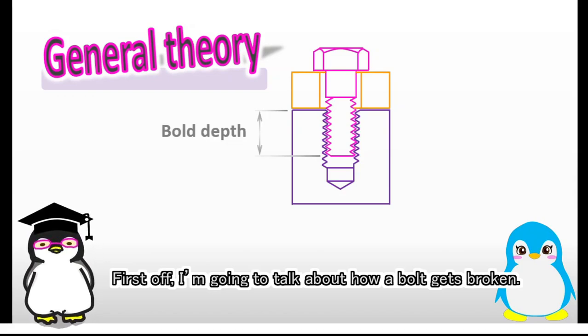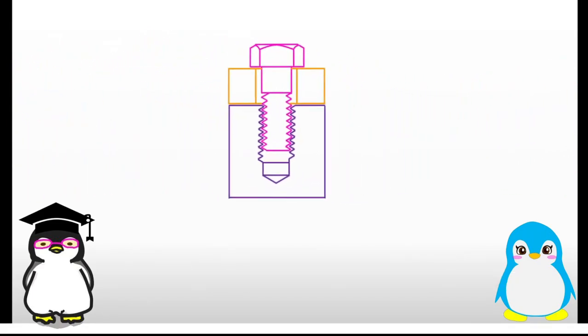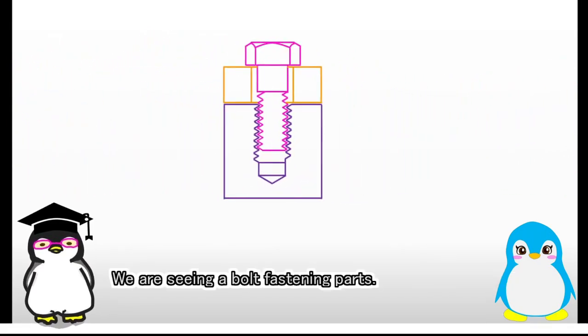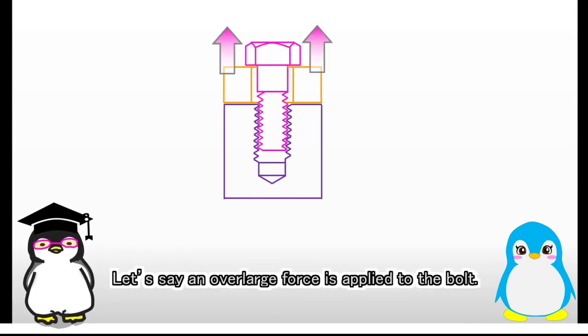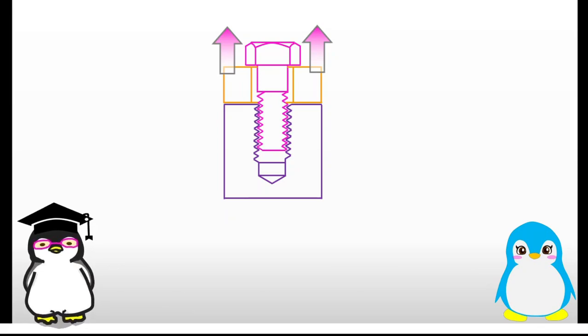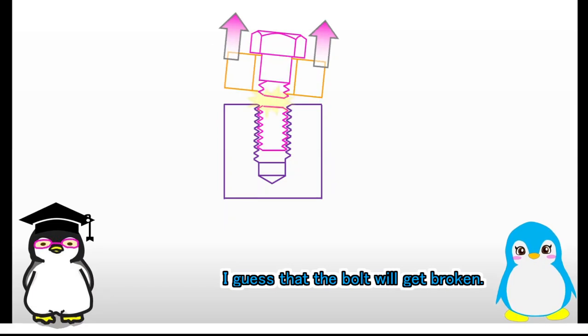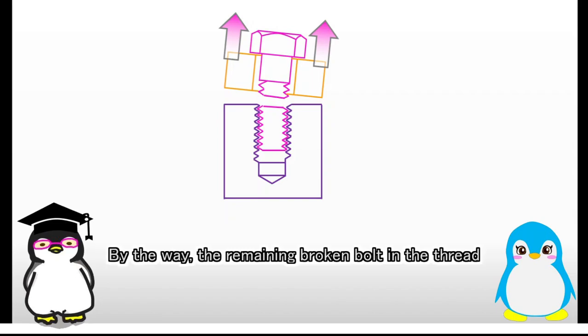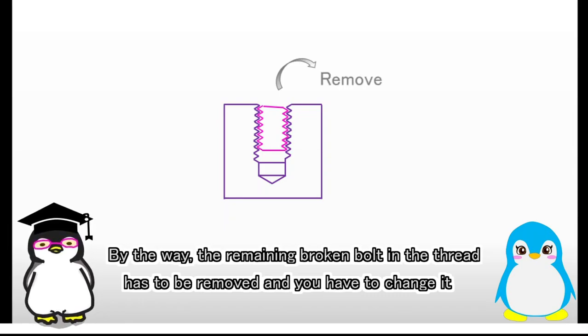First off, I'm going to talk about how a bolt gets broken. We are seeing a bolt fastening parts. Let's say an over-large force is applied to the bolt. What do you think will happen to the bolt? I guess that the bolt will get broken. Right. By the way, the remaining broken bolt in the thread has to be removed, and you have to change it with a new bolt, right?